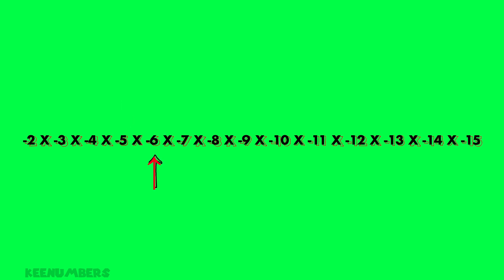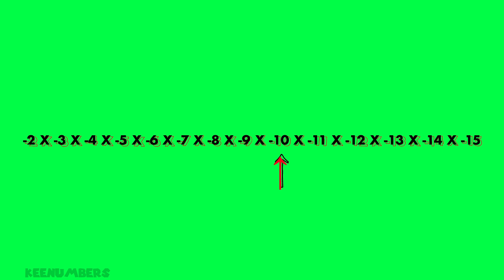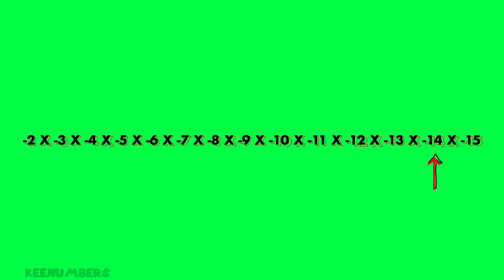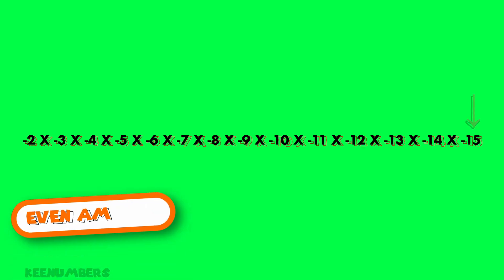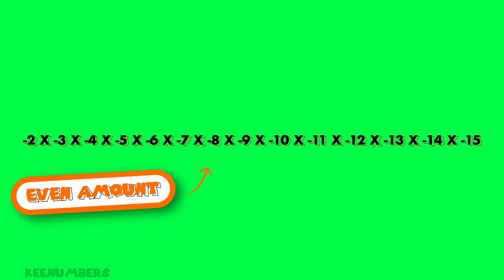Remember those heavyweight contenders? What is negative 2 times negative 3 times negative 4 times negative 5 times negative 6 times negative 7 times negative 8 times negative 9 times negative 10 times negative 11 times negative 12 times negative 13 times negative 14 times negative 15? Well, that's an even number of numbers.